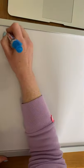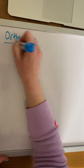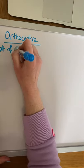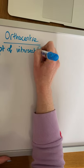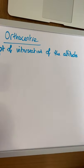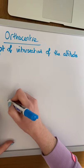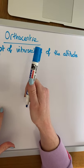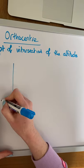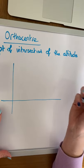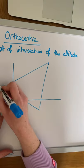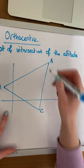Lastly, the orthocenter of a triangle is the point of intersection of the altitudes. Remember, an altitude is a line through a vertex which is perpendicular to the opposite side. One thing to note is that the orthocenter can lie both inside and outside the triangle, so if you get a question where the orthocenter lies outside, don't panic — it's probably correct.